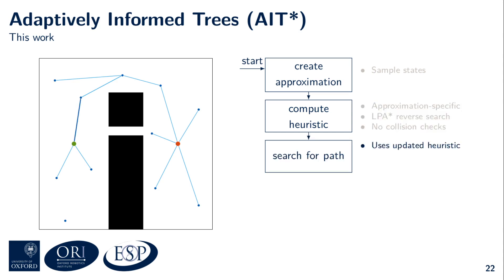Once AIT* has estimated an admissible heuristic for all states connected to the start, it uses this updated heuristic to search for a path using the A* algorithm. This forward search fully evaluates edges, including checking them for collision. No collision was detected during the forward search, and AIT* has found the resolution optimal solution because the heuristic is admissible in the context of this approximation.